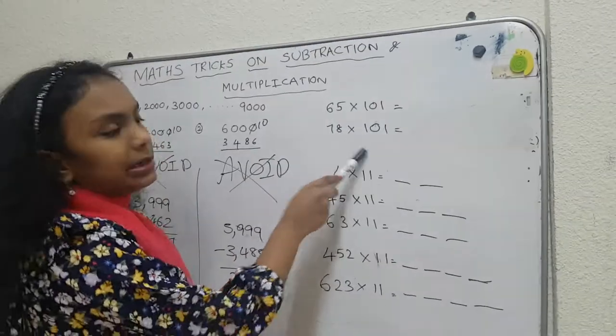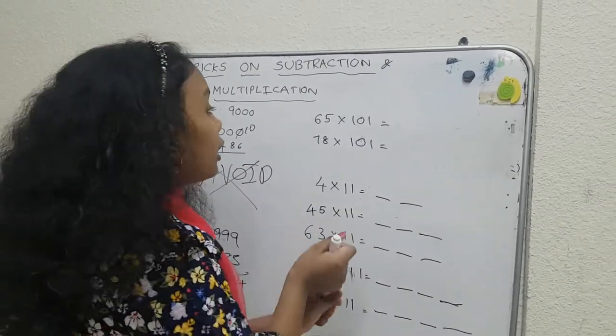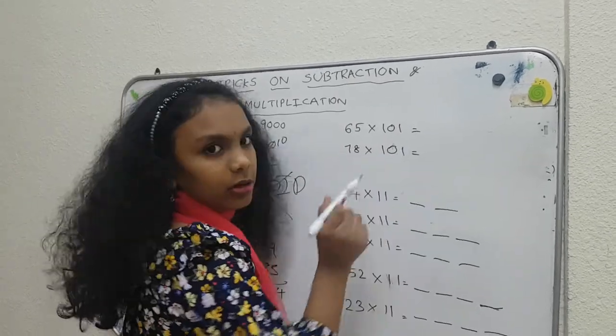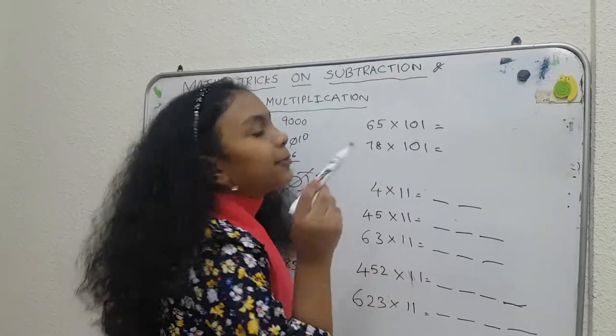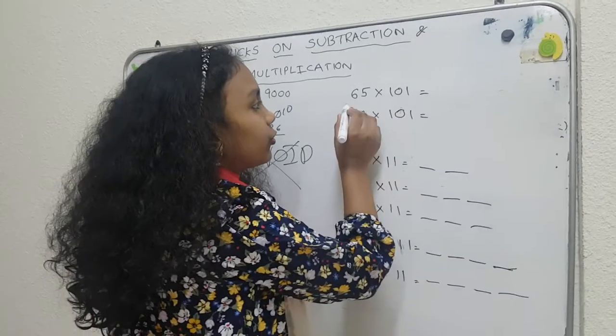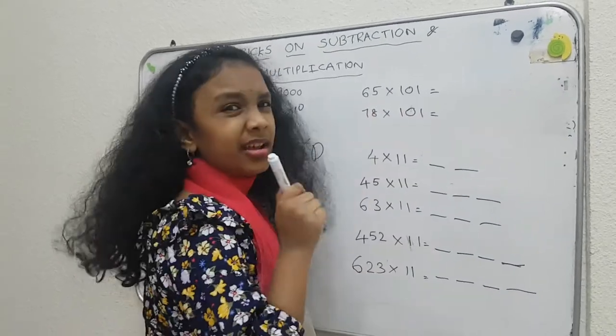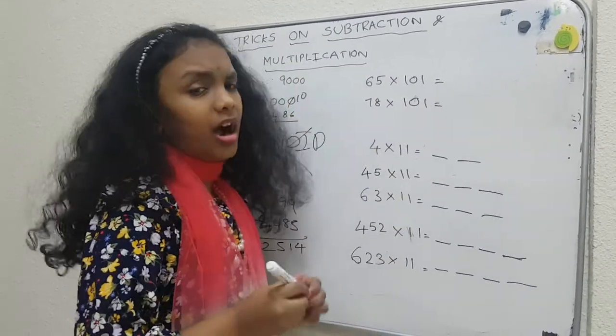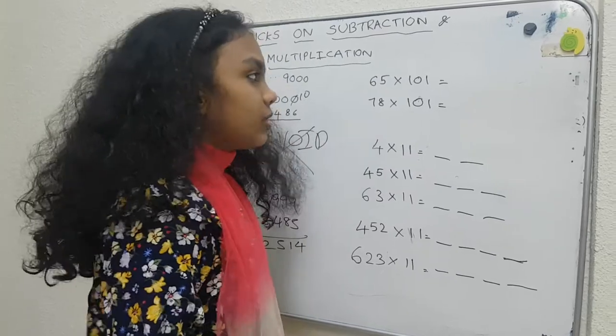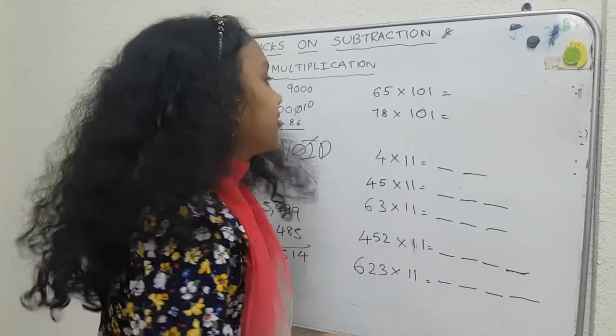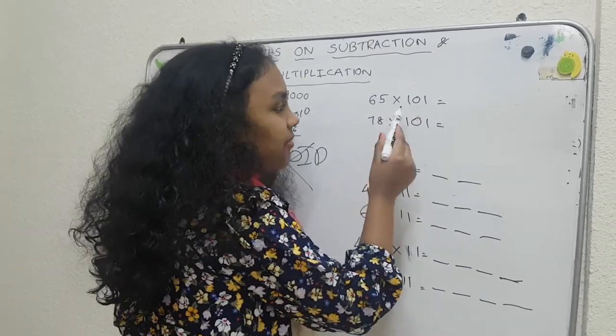So this is multiplication trick. For now, we have 65 divided by 101. I mean, multiplied by 101. Now we have to do it like this. But is it the hard way? Of course, it's the hard way. It's too hard to do it. So now, we have a simple trick for you kids. 65 multiplied by 101.